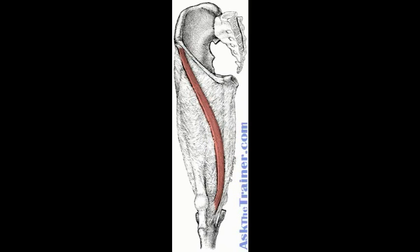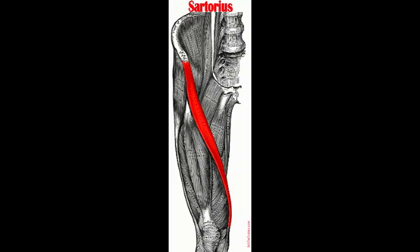The sartorius, the thin, long muscle that runs down the length of the thigh, is the longest muscle in the human body. Its upper portion forms the lateral border of the femoral triangle.